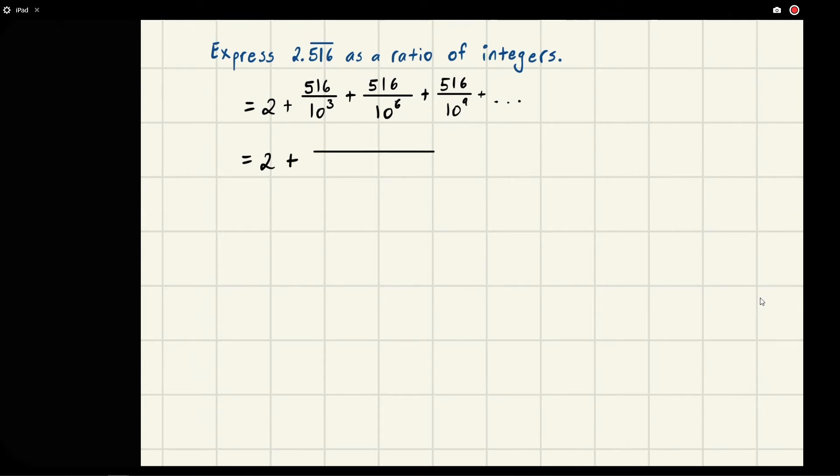We can rewrite this as a sum because this is just a geometric series: 516 divided by 10 to the 3, over 1 minus the common ratio r, which is 1 over 10 to the 3. That's how much it increases every time, and we're going to wind up with a number.